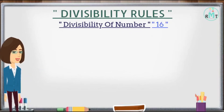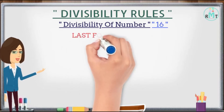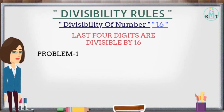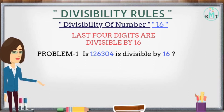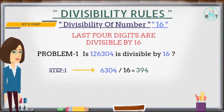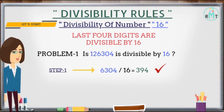Next we will check the divisibility rule for number 16: a number is divisible by 16 if the last 4 digits of the number are divisible by 16. Problem 1: Is 126304 divisible by 16? Step 1: Divide the last 4 digits by 16 and get 394, which is completely divisible by 16. Hence 126304 is completely divisible by 16.